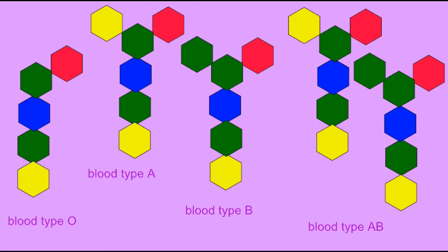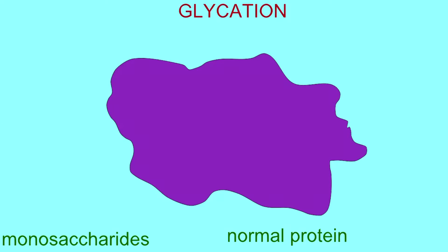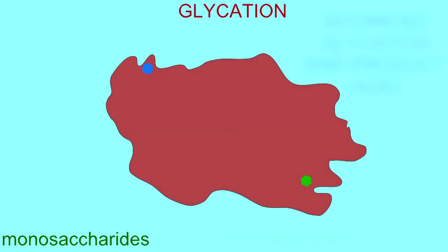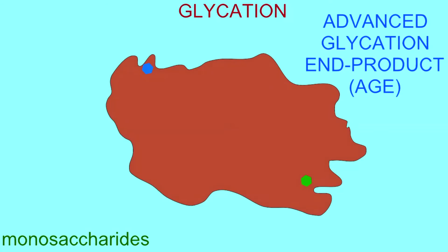However, it is also possible for random sugars to combine with certain amino acids in proteins and with lipids, in a process known as glycation, to produce AGEs, or advanced glycation end products. These proteins and lipids now have an altered structure and therefore can have an altered function or lose their function.